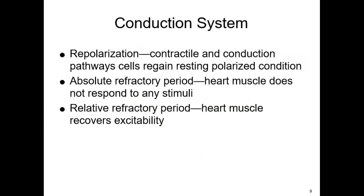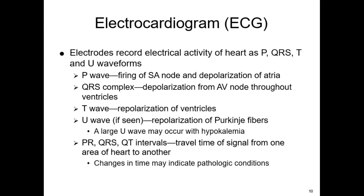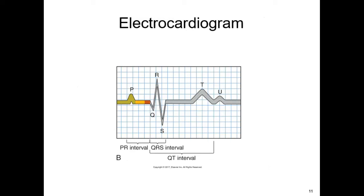There are different parts of the coronary conduction system with different time frames, including repolarization. We have an absolute refractory period where the heart muscle does not respond at all, and then the relative refractory period where the heart muscle recovers excitability. We are able to visualize the cardiac conduction system on an electrocardiogram, or ECG — sometimes EKG — which allows us to view the heart's activity as letters. We've assigned the letters P, Q, R, S, T, and sometimes there's a U-wave that's visible.